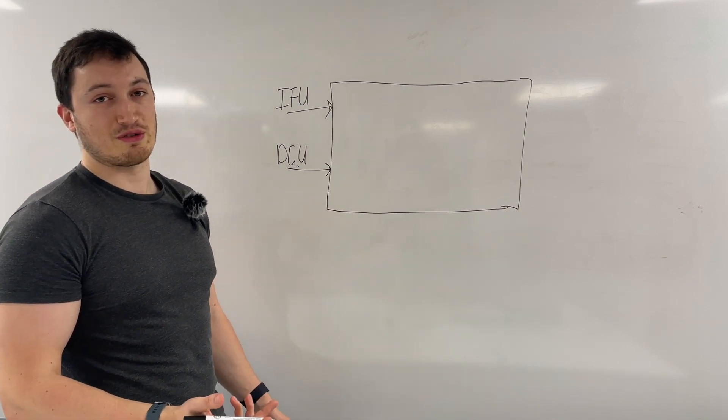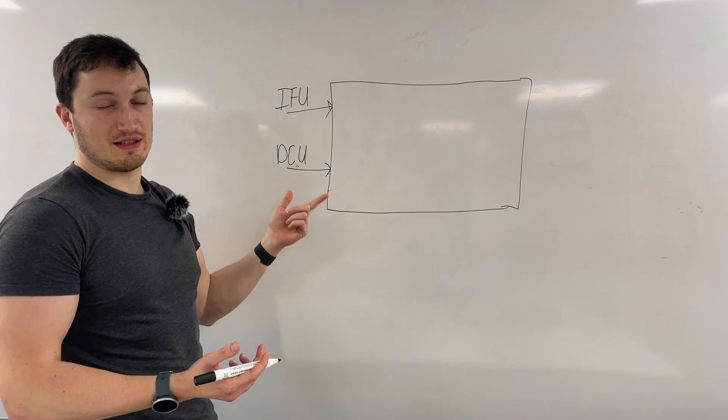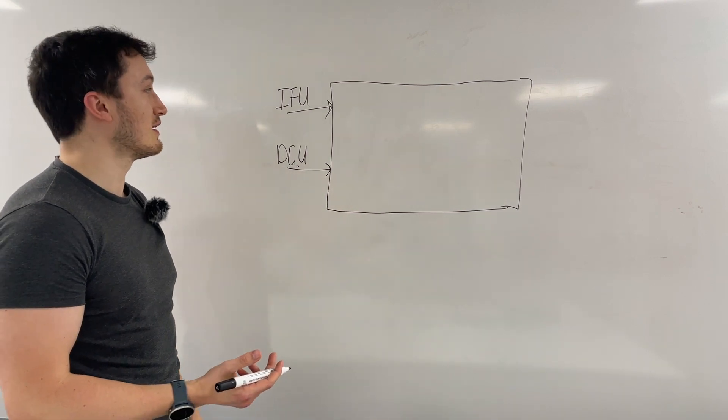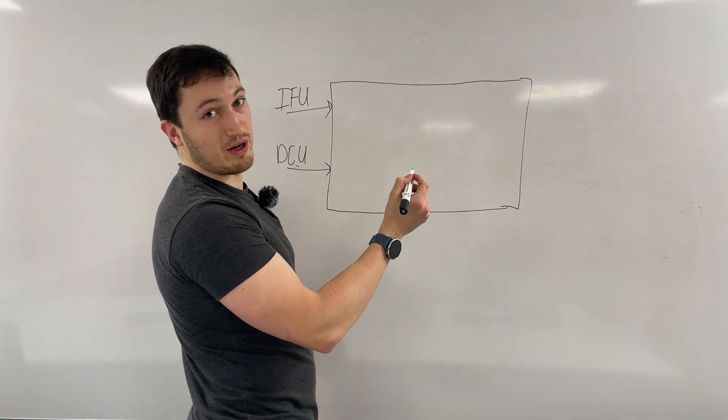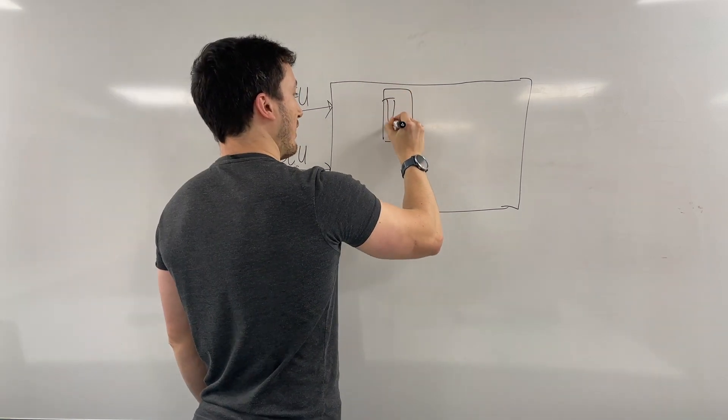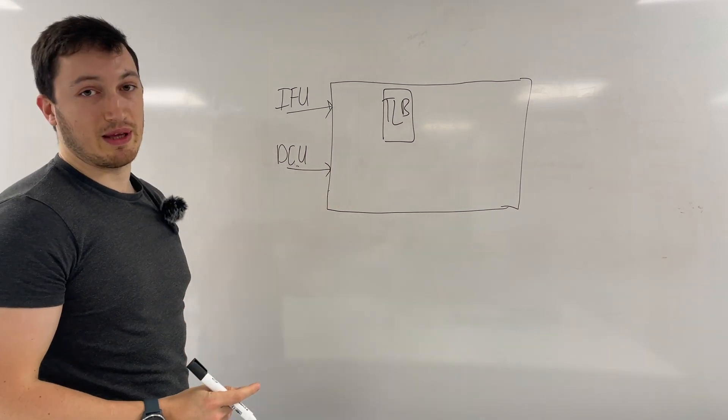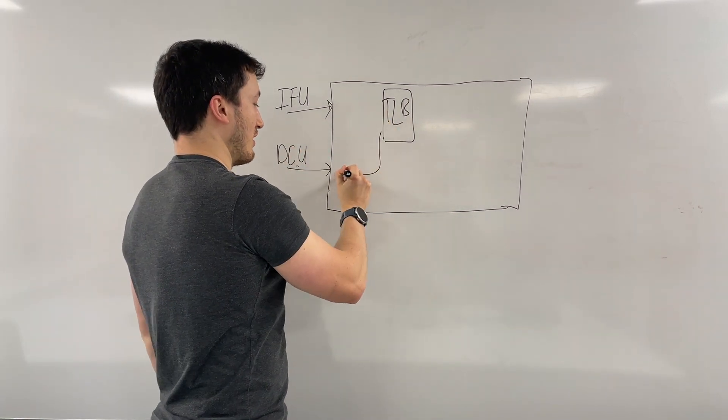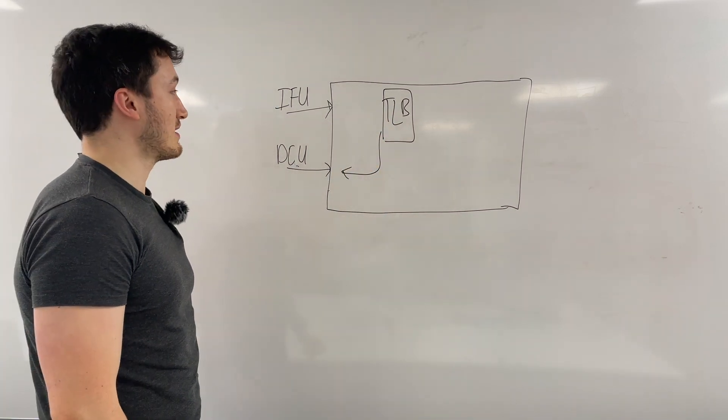So we'll be getting virtual addresses from the IFU and the DCU, so instructions and data requests that need to be translated. First things first, they'll come into the MMU and then we will look up our TLB to see if we have seen this request before and if we can hit in the TLB. If we can, then we will return the translation back to the IFU or the DCU, whoever requested it.